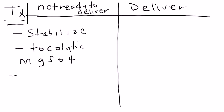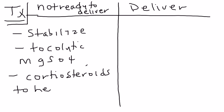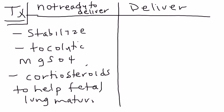Why buy time? If you prolong the pregnancy by even two days, that allows you to give corticosteroids, which help the fetus's lungs mature — that's very important. So in this scenario: the woman has placenta previa, she's not ready to deliver, you give a tocolytic, then corticosteroids like betamethasone, which allows the fetus's lungs to mature and gets the fetus ready for eventual delivery.